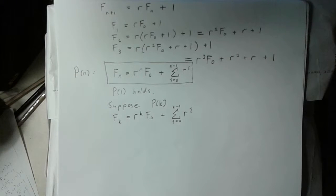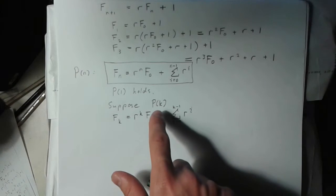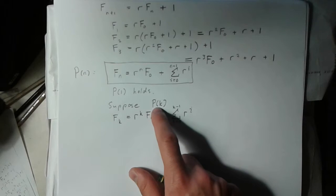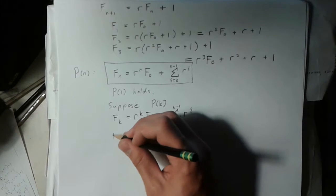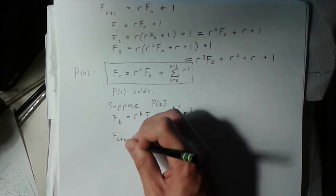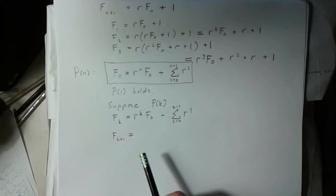And now the goal is to prove that supposing pk implies pk plus 1. So I'm just going to look at what is the k plus 1th term. And now is when I use the original definition of the recurrence relation over here.